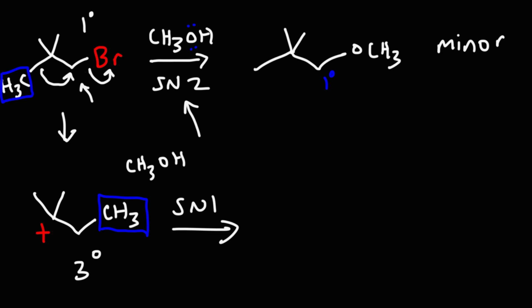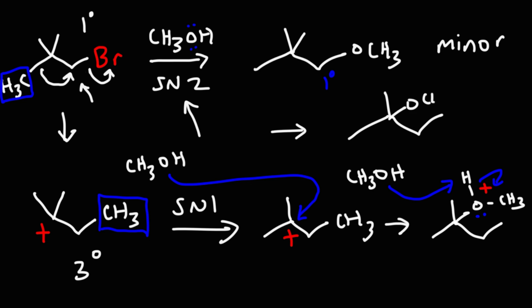Now, methanol, actually before we do that, let's redraw this in a better way. So these two structures are equivalent. So now we could use methanol as a nucleophile to react with the carbocation. And then in the last step, we're going to have an acid-base reaction where methanol is going to act as a weak base removing the proton. And this will be the final answer. So this is the SN1 product. This is the SN2 product. The SN1 product is going to be the major product in this reaction.